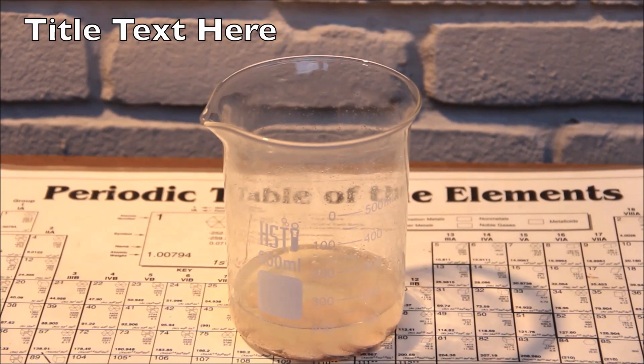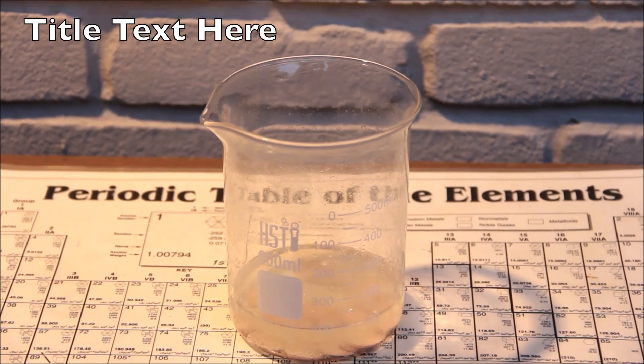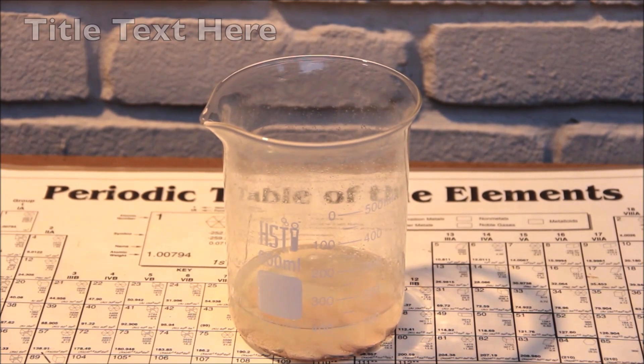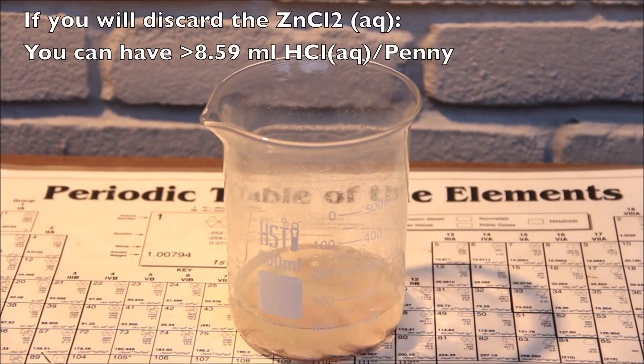If you are going to discard the solution of zinc chloride, then you can have an excess of hydrochloric acid. If you are going to keep it for the next experiment, you should have an excess of zinc.